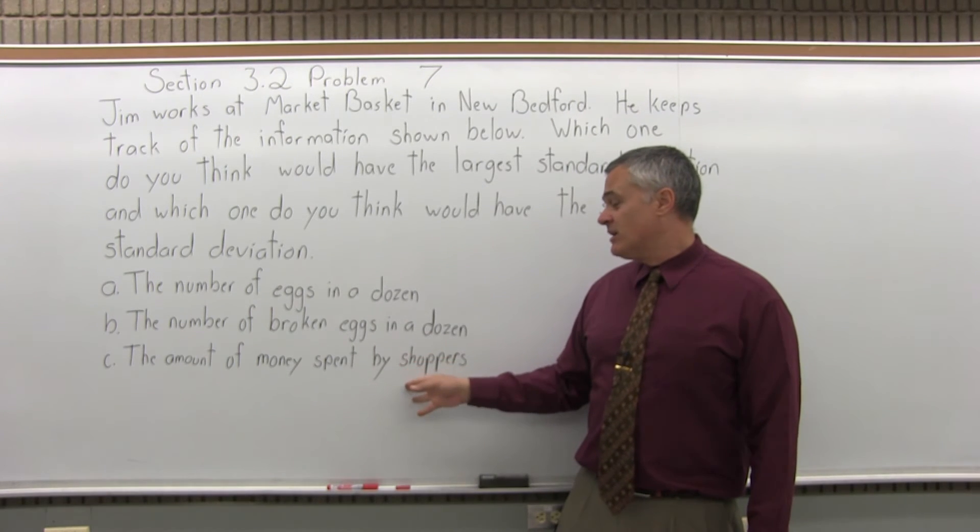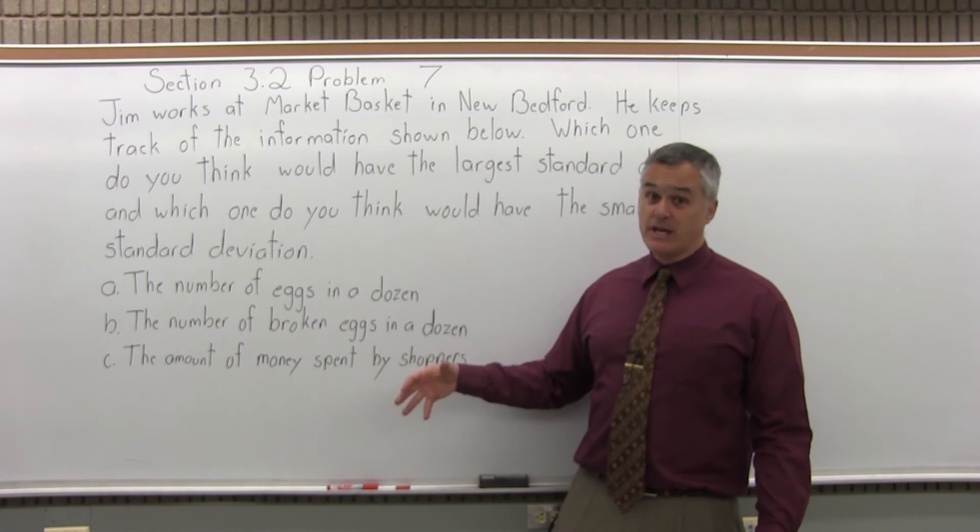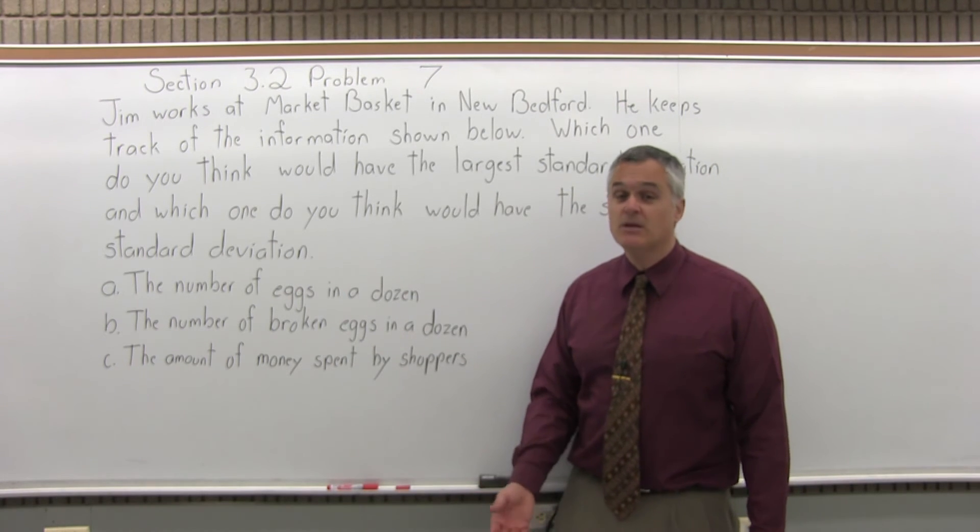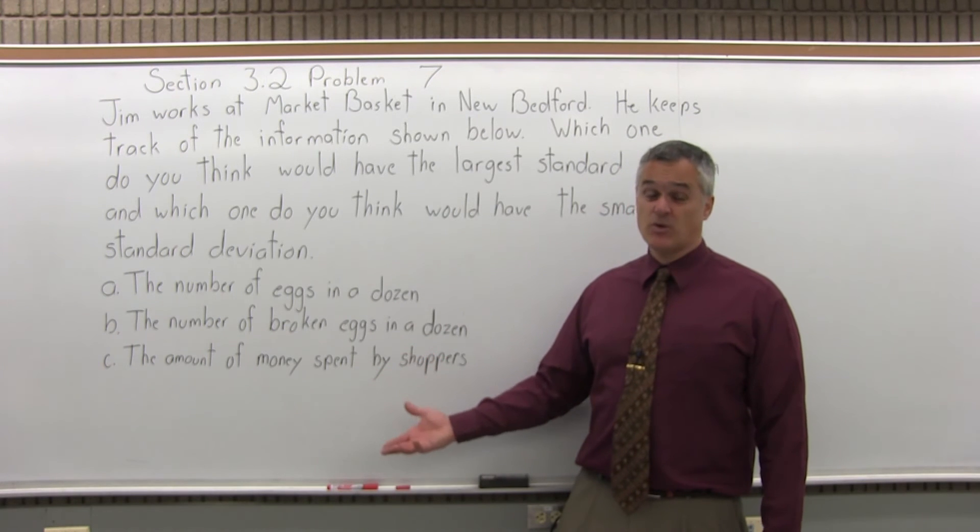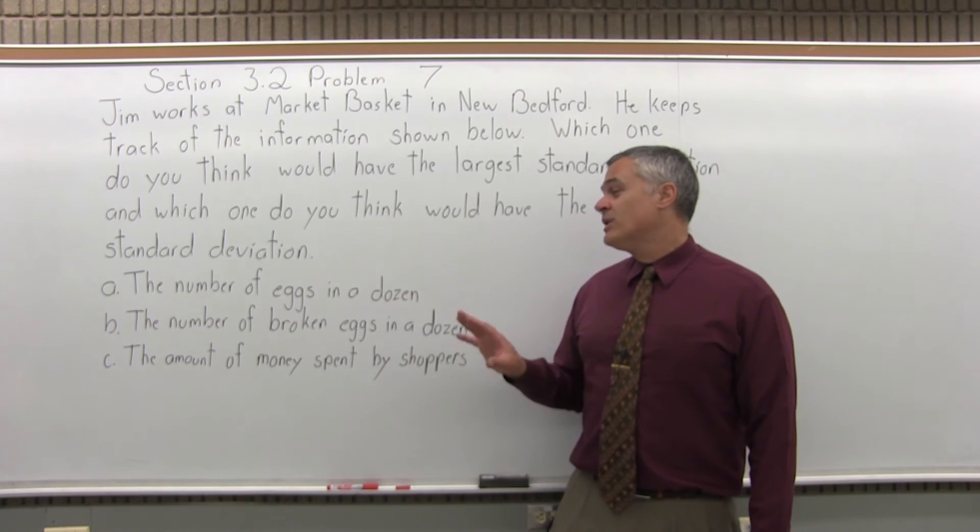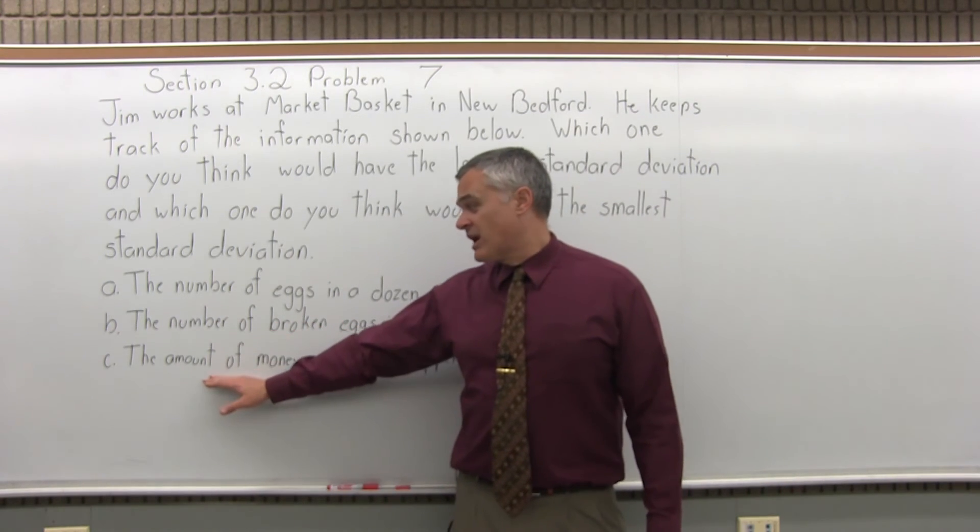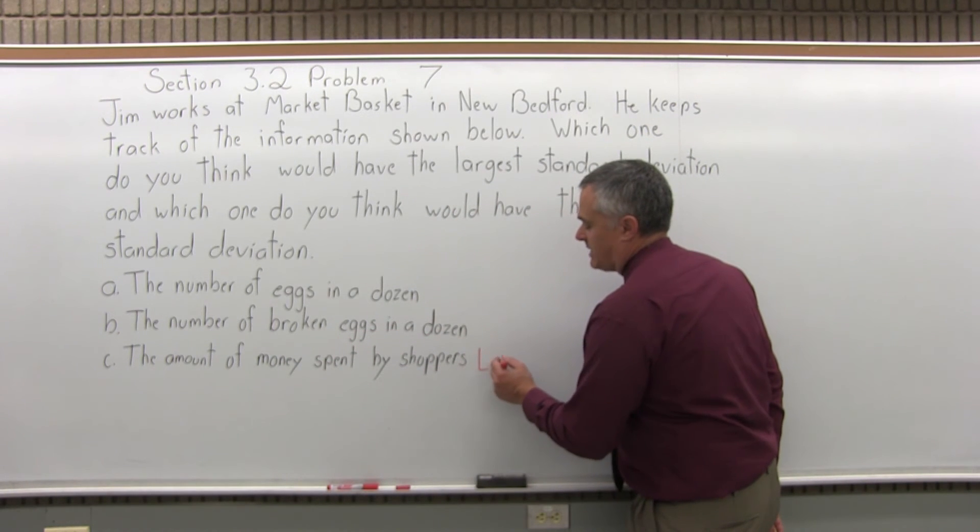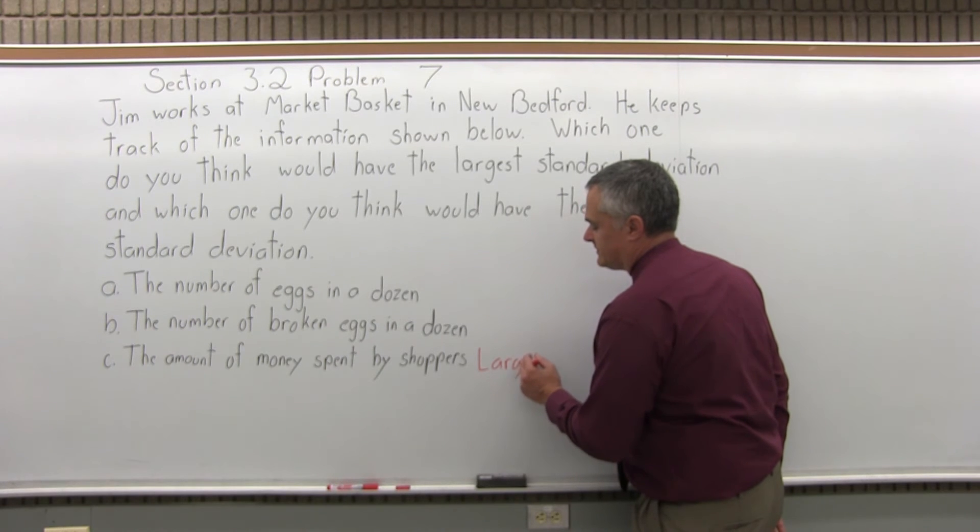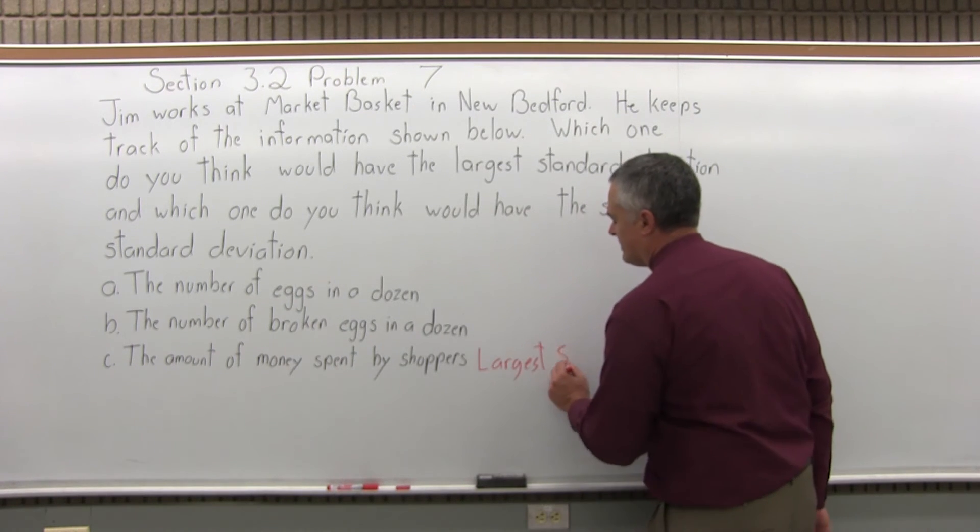And the last one, the amount of money spent by shoppers, well that can range quite a bit. Some shoppers come in and spend maybe $20 or $30, whereas other shoppers might spend $200, $300 or more. So the data that's going to be most spread out is going to come from how much money is spent by shoppers. So that will be largest standard deviation.